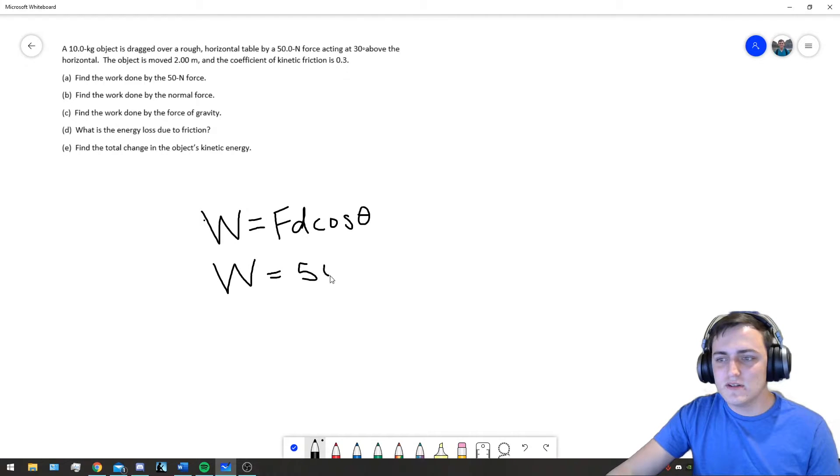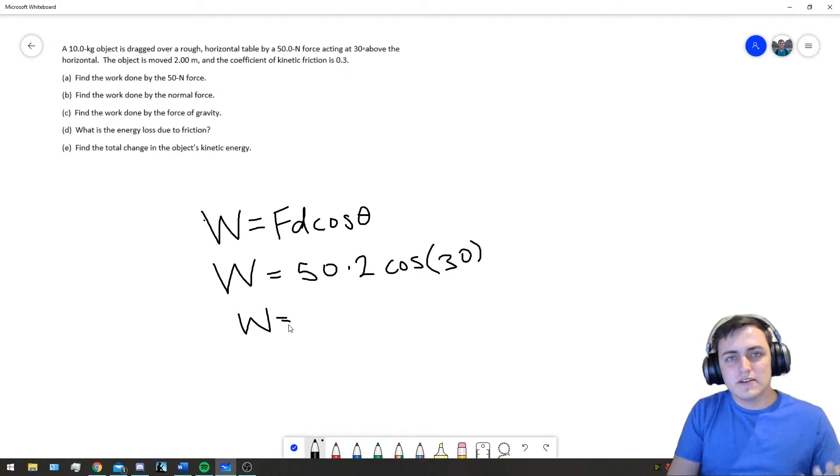and so we have to account for that. And so, our force is 50 N, distance is 2 meters, times cosine, and the angle between them is 30 degrees. The angle between the force and the displacement is 30 degrees. And, this is going to tell us our work.